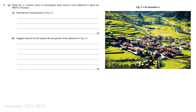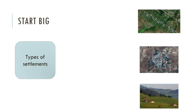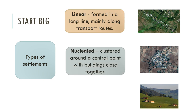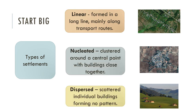Here's the first question — nice and straightforward. The first part asks you to describe the housing shown in a figure, and the second part asks you to suggest reasons for the original site and growth of the settlement. We'll take each question in turn. The first thing to do is start big and identify which type of settlement you can see — is it linear, nucleated, or dispersed?